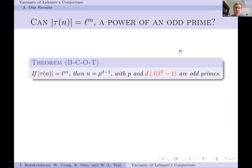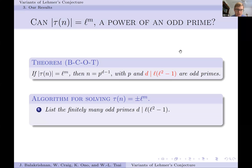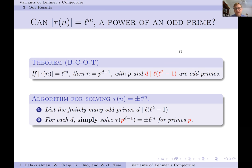Because of the multiplicativity of the tau function, the natural place to start is to ask questions about prime powers. Our core theorem is that if tau(n) is a prime power in absolute value, then n must be p^(d−1), where p and d are both odd primes, and d must be a divisor of l(l²−1). Once we have this theorem, we can outline an algorithm: list all finitely many odd primes dividing l(l²−1), then solve tau(p^(d−1)) equals plus or minus l^m over all primes p.